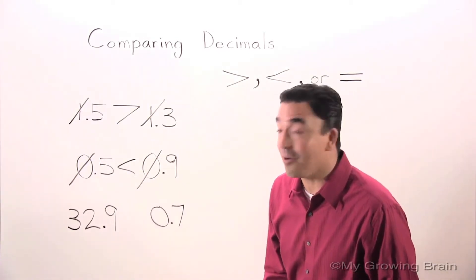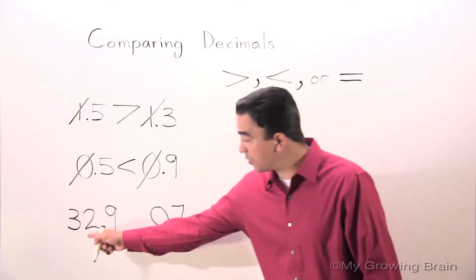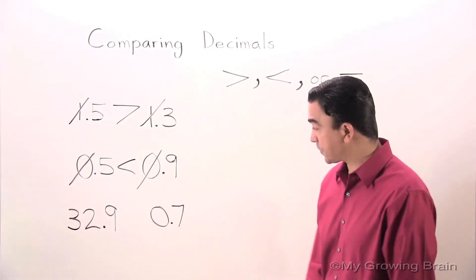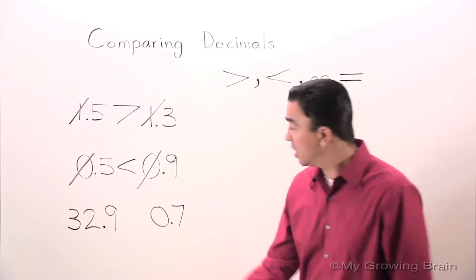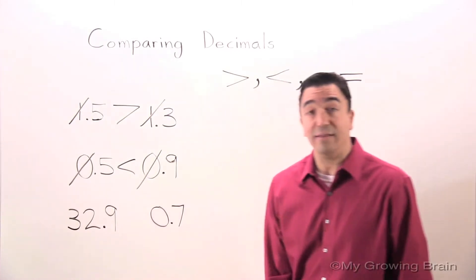One more to go. 32.9, 0.7. Or, 32 and 9 tenths, 7 tenths.